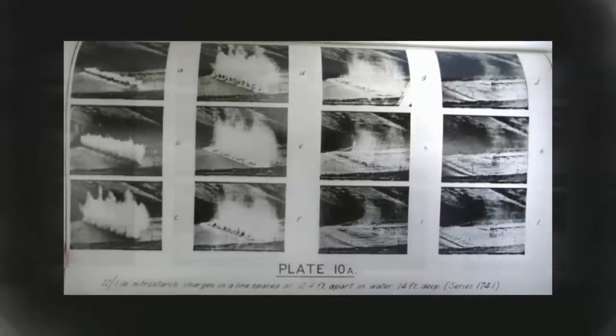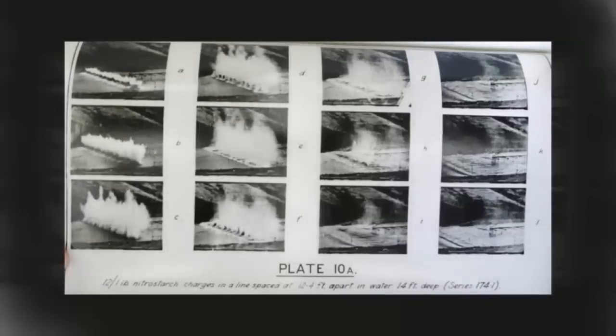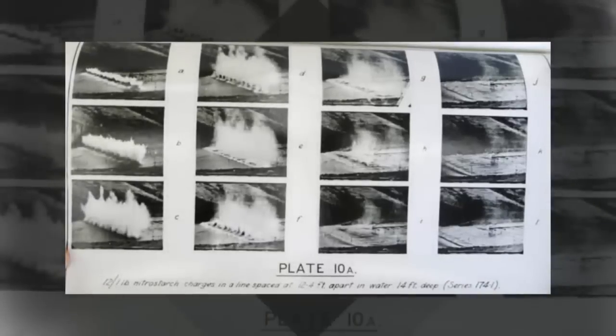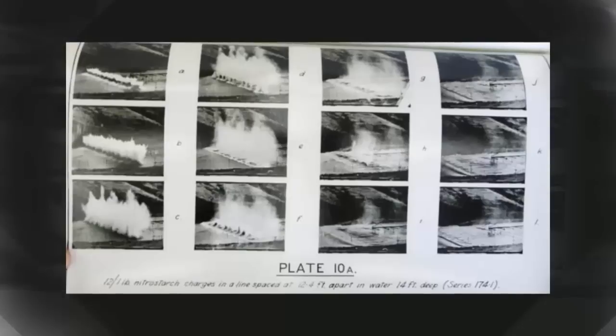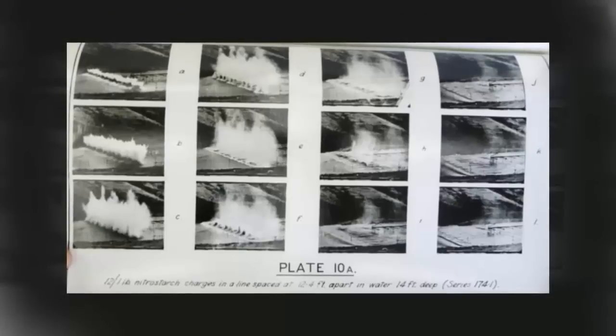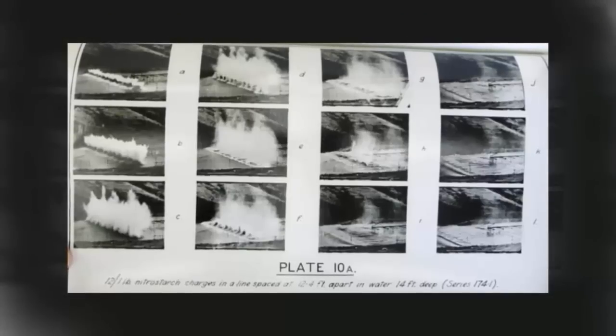7. Project Seal. New Zealand isn't the country that springs to mind when you think of doomsday devices, but during World War II, they collaborated with the United States to create one. Code-named Project Seal, the countries experimented with the possibility of creating an artificial tsunami by detonating an underwater bomb.